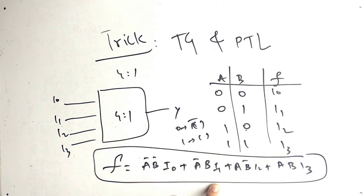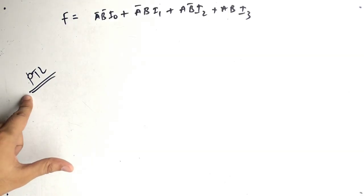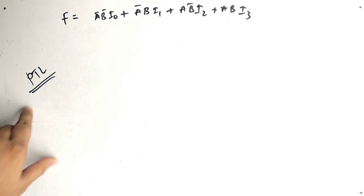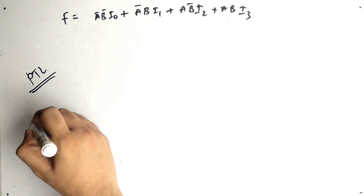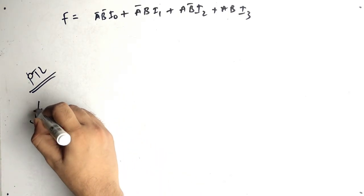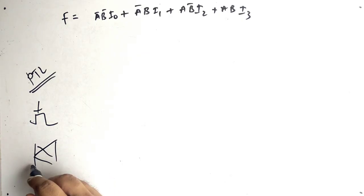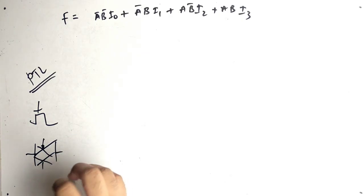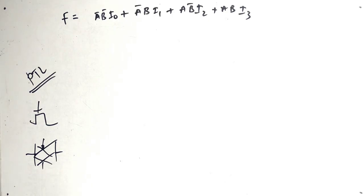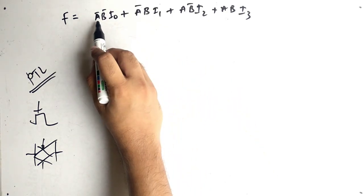Now we have to write this equation and implement it using PTL and TG. PTL means Pass Transistor Logic — it uses this symbol. TG means Transmission Gate — it uses this symbol. The logic remains the same for both; first, check for the common term.